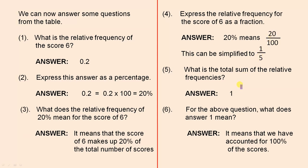What is the total sum of the relative frequencies? The total sum is always 1. For the above question, what does answer 1 mean? So what is actually the meaning of this? This is the answer. It means that we have accounted for 100% of the scores.